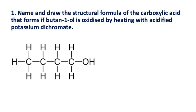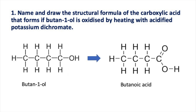Let's test your understanding with some practice questions. Question one: name and draw the structural formula of the carboxylic acid that forms if butan-1-ol is oxidised by heating with acidified potassium dichromate. The answer is butanoic acid — it has four carbons in the chain, a C=O double bond, OH group, and the structural formula is shown on this slide.